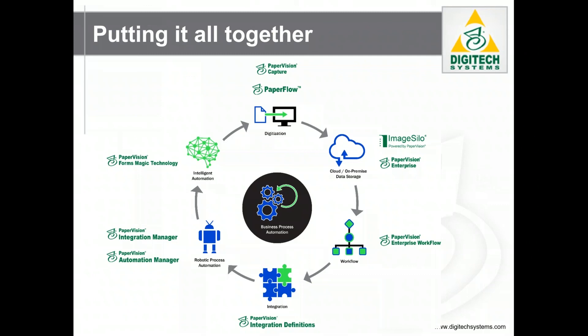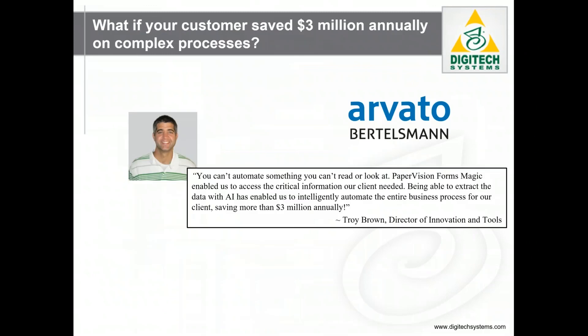And finally, our patented artificial intelligence engine, PaperVision Forms Magic, helps eliminate manual effort by automatically recognizing document types as they're scanned and scraping critical information from them to eliminate manual data entry. It's the only intelligent automation suite on the market and it's a proven tool that improves processes and reduces costs.